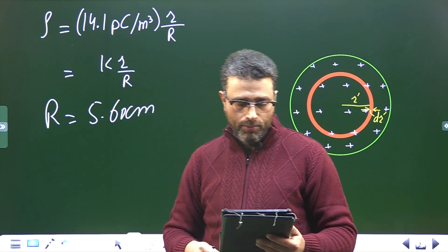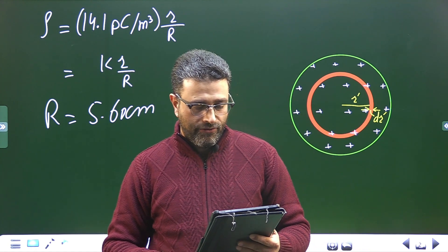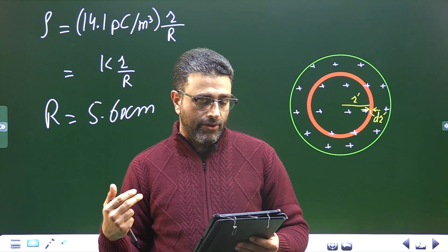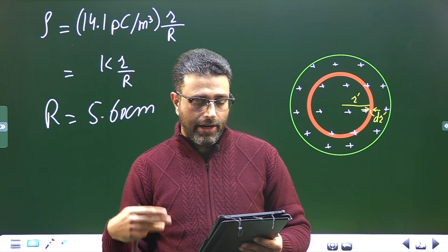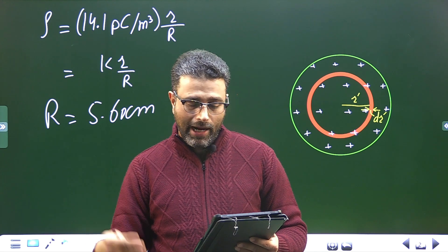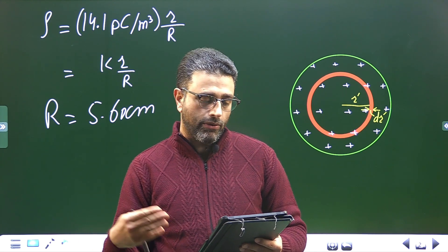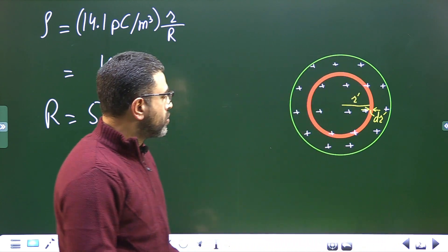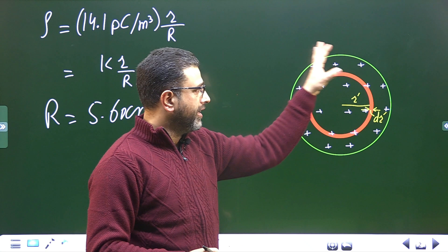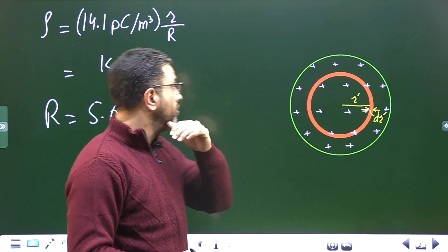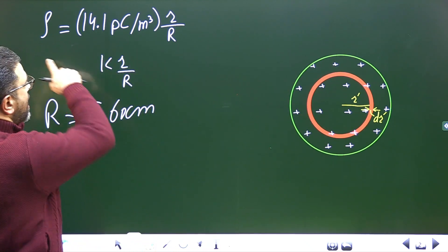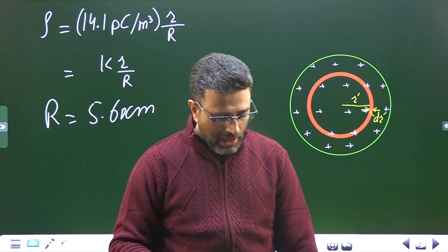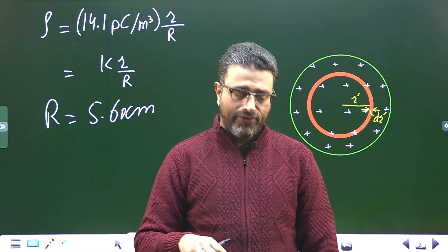We need to find: part A, the sphere's total charge; then the field magnitude at r = 0, r = R/2, and r = R; and finally draw a graph of field versus radial distance r. We have a charged non-conducting sphere with non-uniform charge density. We'll first find the total charge, then field at different points.